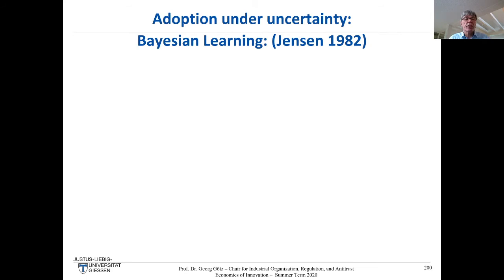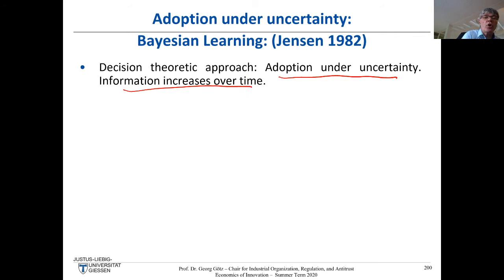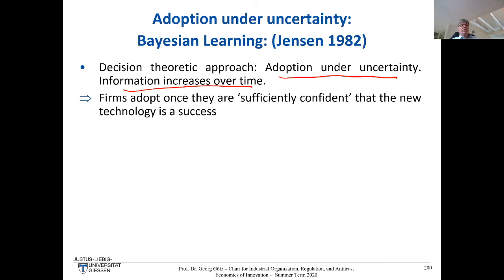I now want to present a paper by Richard Jensen published in the Journal of Economic Theory in 1982. This is a much more explicit, decision-theoretic approach where adoption is a decision under uncertainty and information increases over time — but in a much more obvious way. It's not an infection; these agents actively do something.